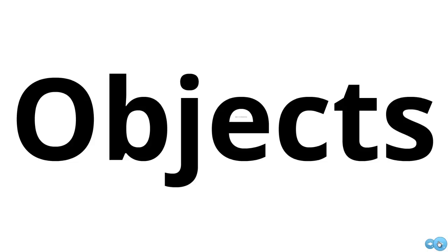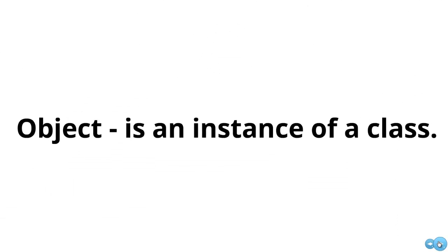Now let's look at this idea of objects. We know a class is that blueprint or template that describes something in terms of its data and operations. An object is just simply an instance of a class — so we're talking about a specific superhero or a specific bank account. Now that we have a definition for what an object is, let's go back to our superhero example and look at specific instances of the superhero class.